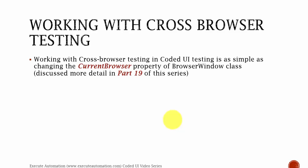Working with cross-browser testing in Coded UI testing is as simple as changing the CurrentBrowser property of the BrowserWindow class. We have a separate video on part 19 discussing how to work with different methods and properties of the BrowserWindow class. We also touched on the cross-browser property there. The CurrentBrowser property is the only property you need to set the different browser types for your testing.